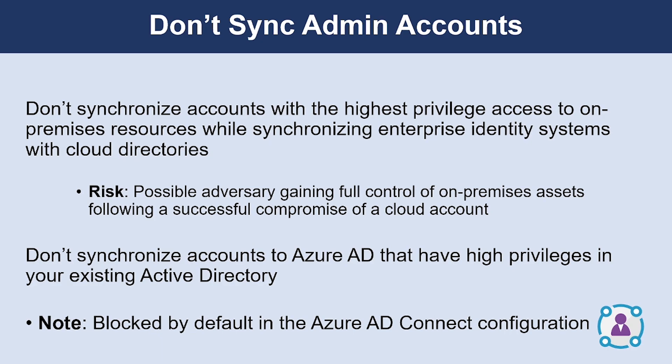Another tip is to not synchronize accounts with the highest privileged access to on-premises resources as you synchronize your enterprise identity systems with cloud directories. For Azure, don't synchronize accounts to Azure AD that have high privileges in your existing Active Directory. This is blocked by default in the default Azure AD Connect configuration, so you only need to confirm you haven't customized this configuration.